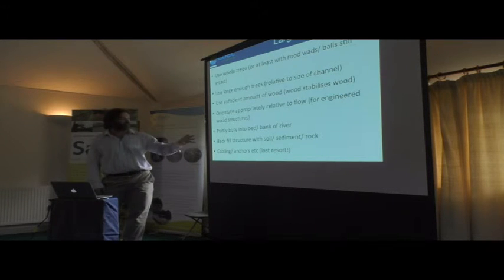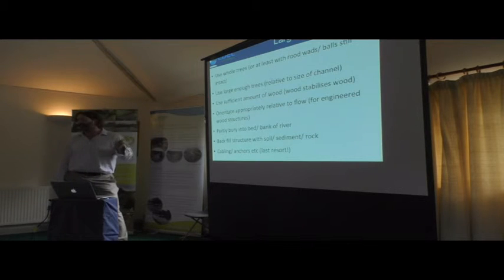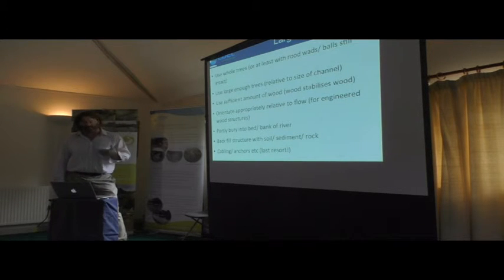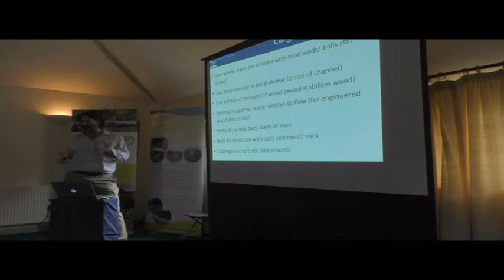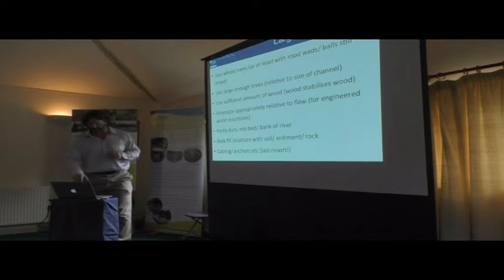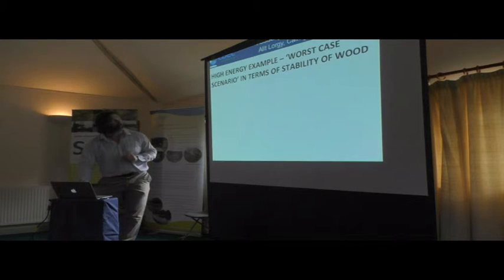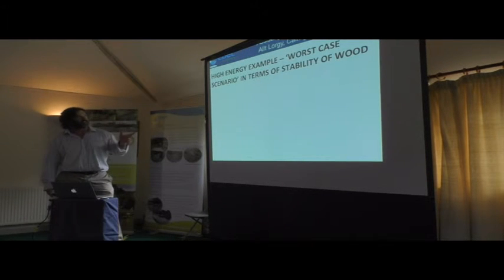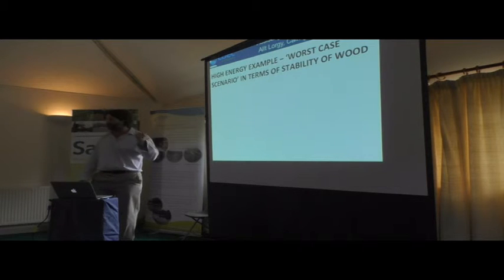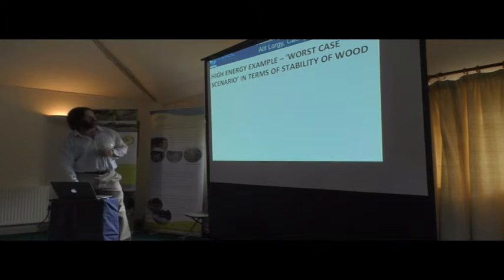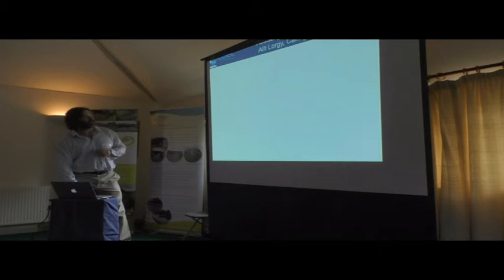In terms of determining the type of measure you need, we can do calculations based on computational fluid dynamics to work out the forces acting on a piece of wood, and determine the type of measure needed to stabilise it. This is the high energy example — the Alt Lorgi — which is the worst case scenario in terms of stability of wood.